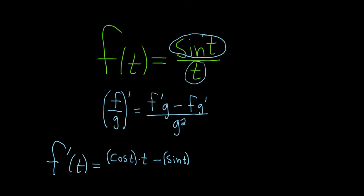times the derivative of the bottom. Well, the bottom function is t, so its derivative is 1, all over the bottom one squared. Let's double check that.